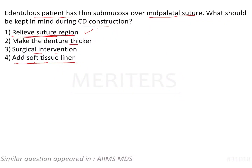Surgical intervention is not required even if the raphae is very prominent, because it is not fibrosis or ossification — it is a natural structure that can be managed prosthetically with relief or a selective pressure impression. Therefore, the correct answer is option one: relieve the suture area when the submucosa or mucosa of the mid palatine suture is prominent.